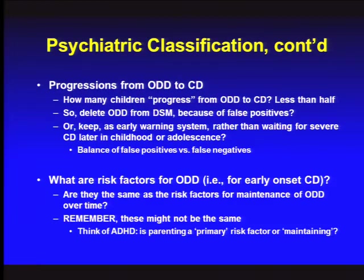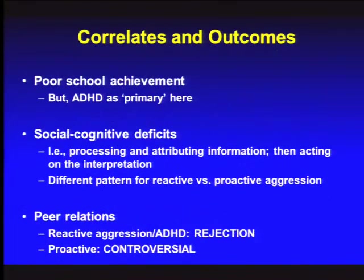Risk factors for ODD — why these kids get ornery — may not be the same ones that predict when ODD progresses to conduct disorder. What predicts early symptoms may not be the same factors that predict their maintenance over time. If you're in the ballpark of ODD or CD, you've got serious aggression problems and often don't do well in school. But we have to take into account ADHD, which is actually a bigger predictor of school problems than aggressive behavior alone.